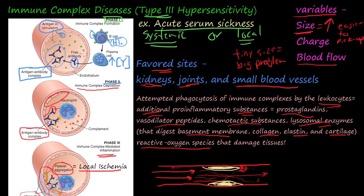So the process starts out normal, but once the immune complex embeds itself inside the tissues, the problem arises. The favorite sites are kidneys, joints, and small blood vessels — we'll discuss examples in the next video. That is the systemic effect. For a local effect, the same reaction happens just in a local scenario — a local kidney or a local joint — and we'll show examples of that in the next video.